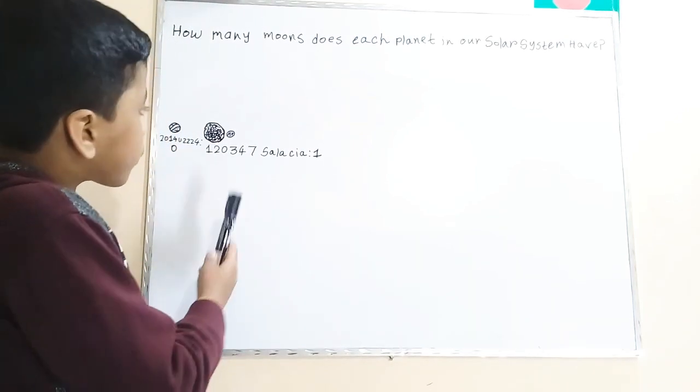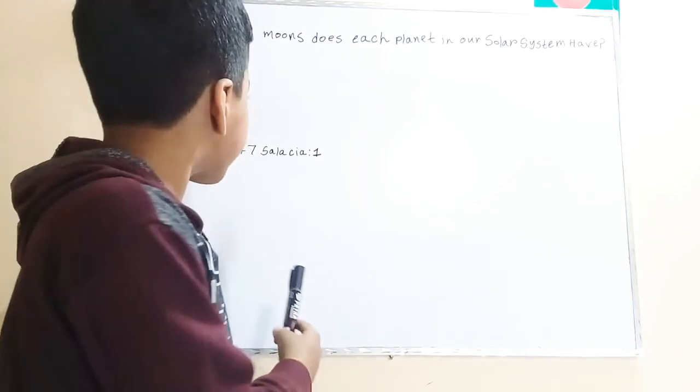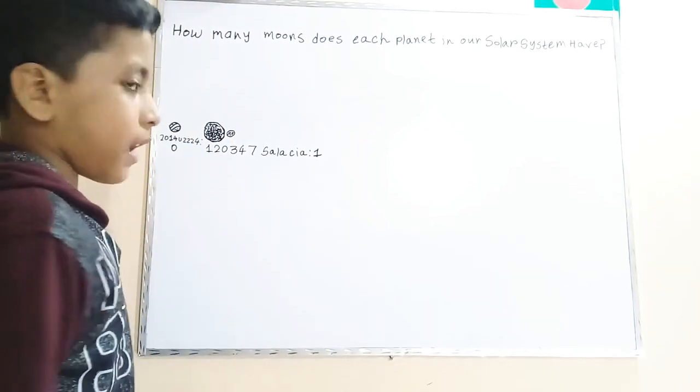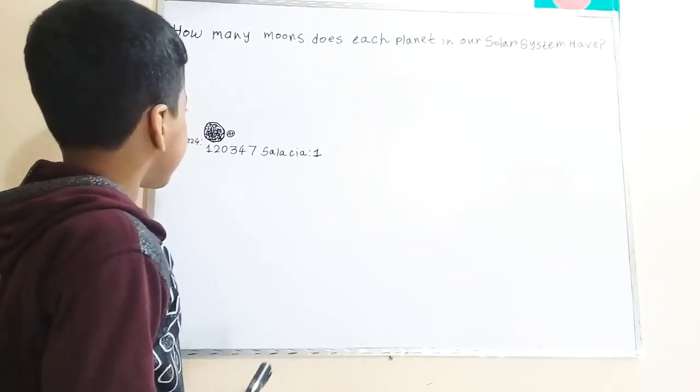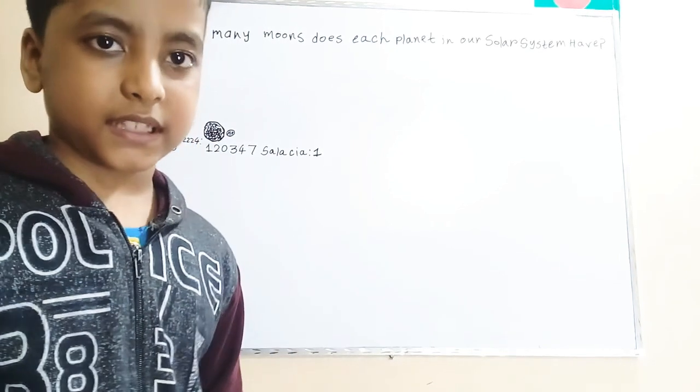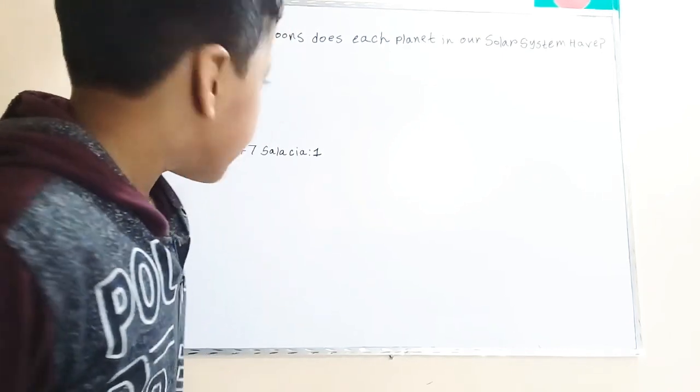Well, 120347 Salacia has one moon which name is Actaea and which diameter is 190 miles, and it's a third of the diameter of 120347 Salacia.